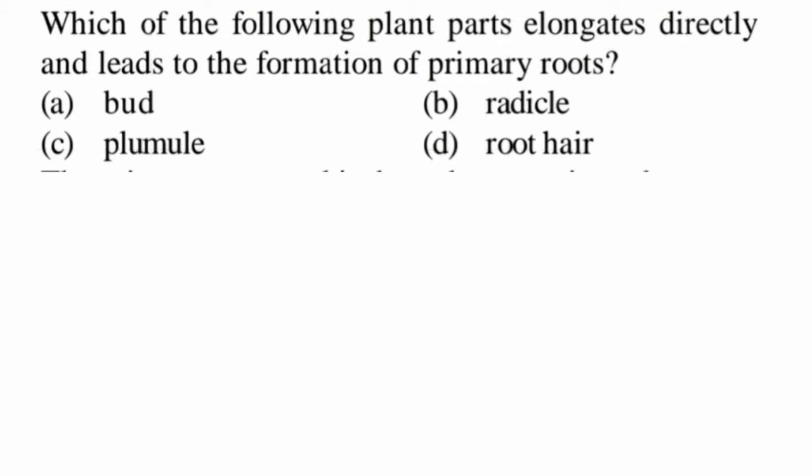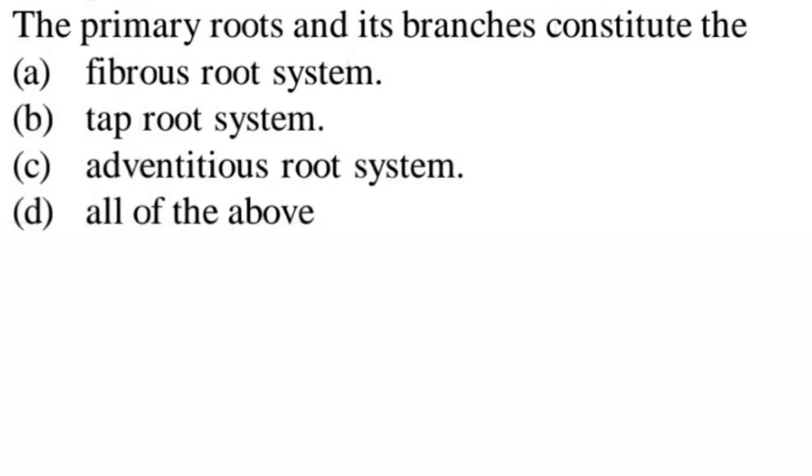Next question: which of the following plant parts elongates directly and leads to the formation of primary roots — bud, radicle, plumule, or root? The answer is radicle, because in dicotyledonous plants the direct elongation of the radicle leads to the formation of the primary root, which grows into the soil. So option B, radicle, is correct.